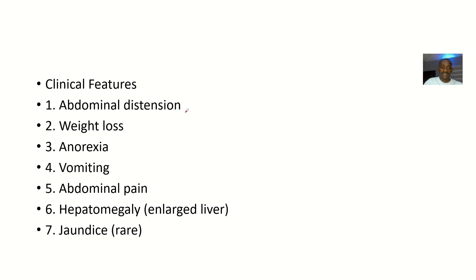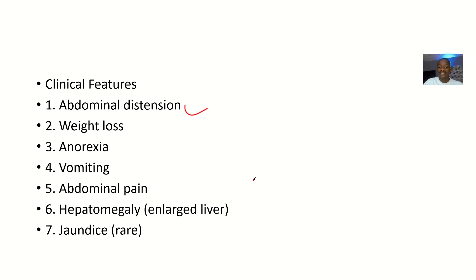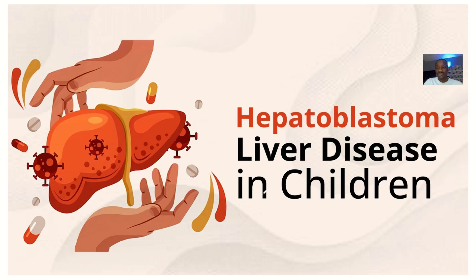Clinical features include abdominal distension, weight loss, anorexia, vomiting, and abdominal pain. The liver will be enlarged — that's hepatomegaly — and jaundice could also follow.